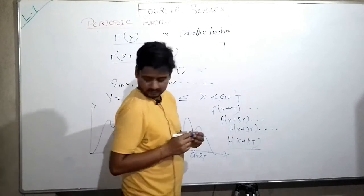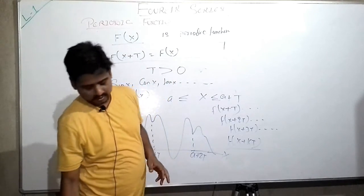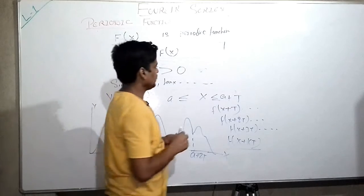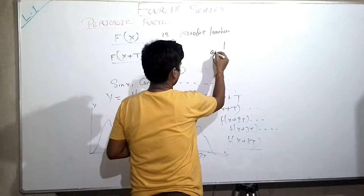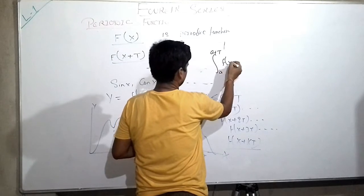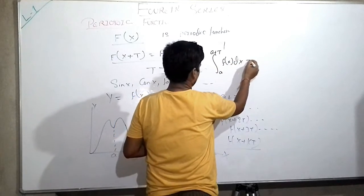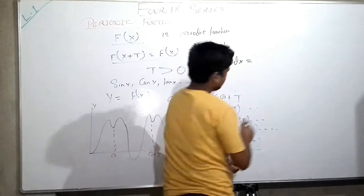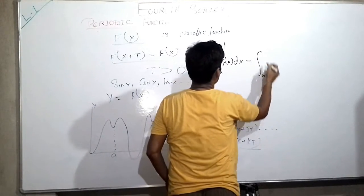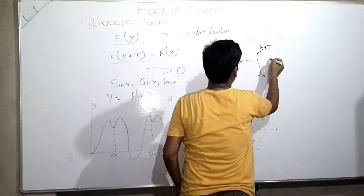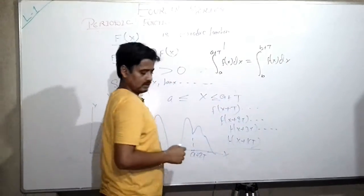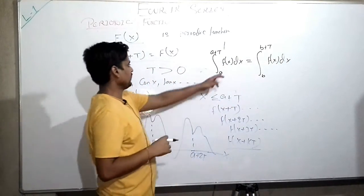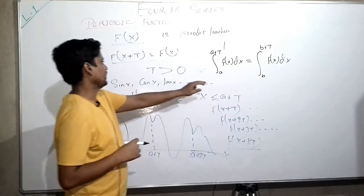Then we can say that it is also integrable in another interval of equal length T. So it means the integral from a to a + T of f(x) dx can be equal to the integral from b to b + T of f(x) dx.